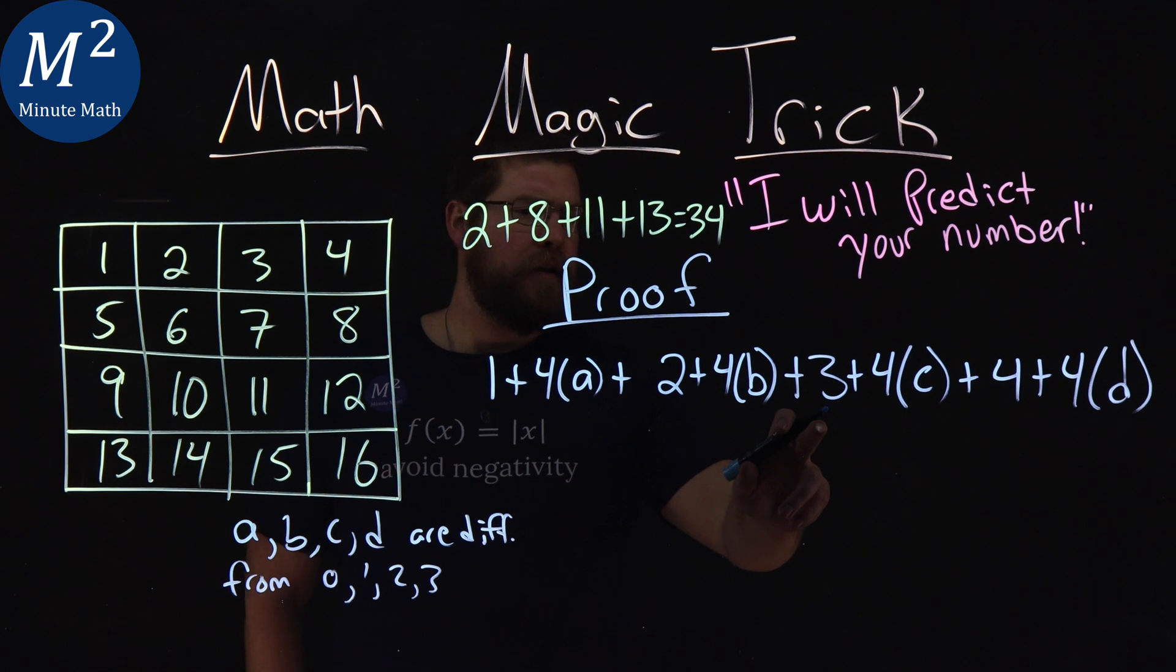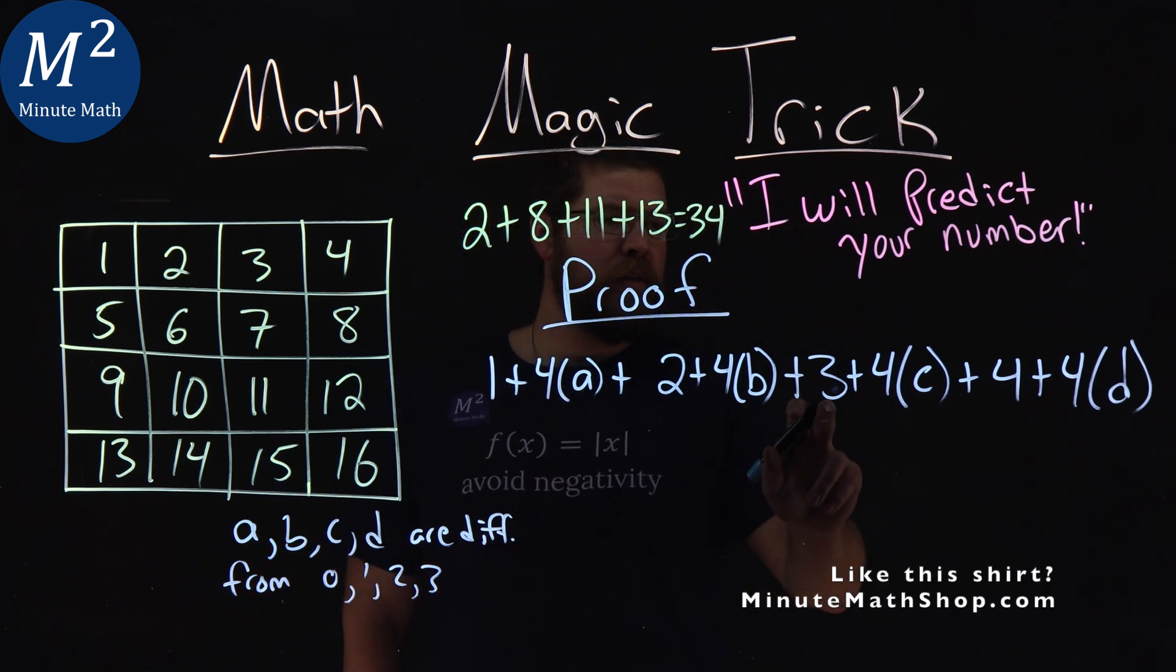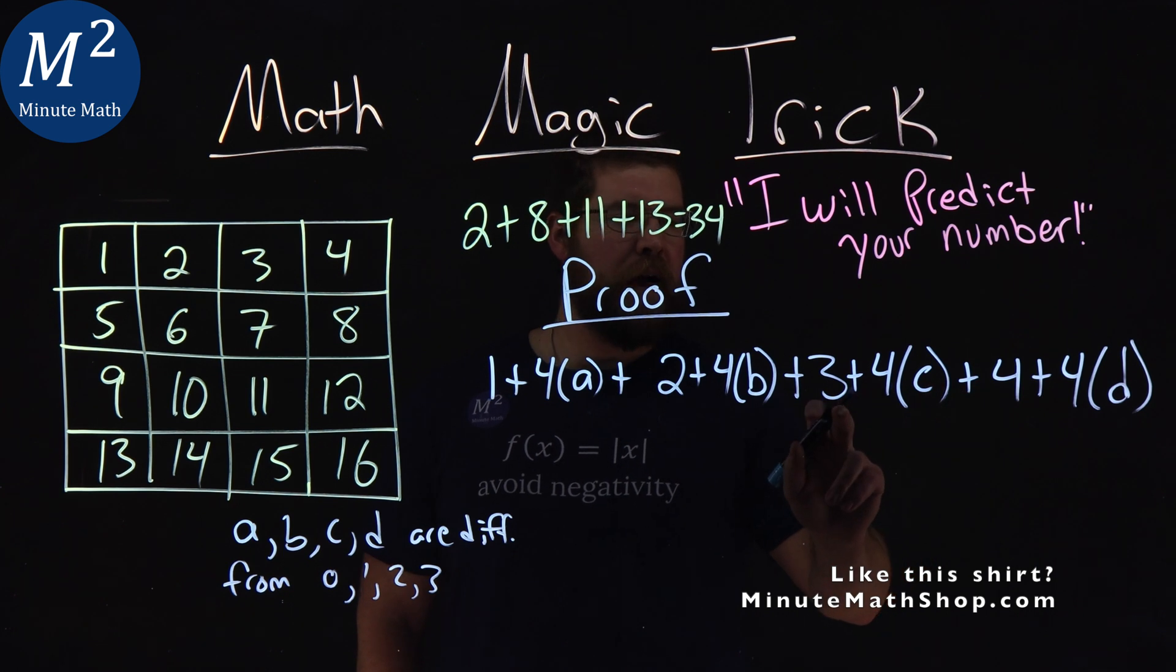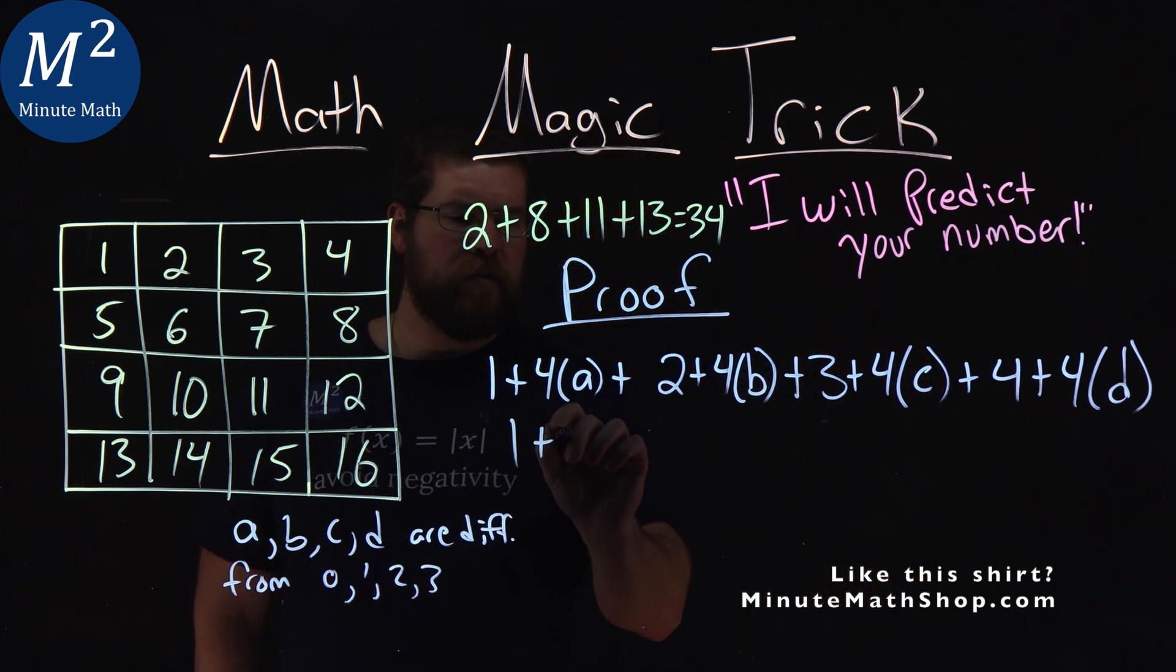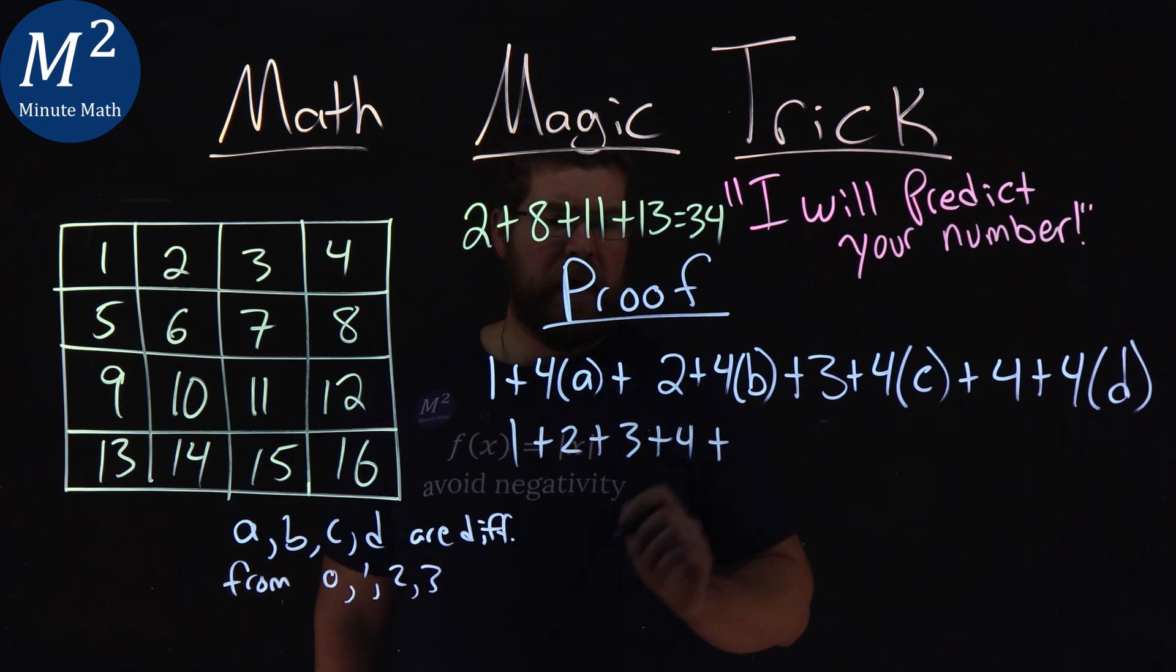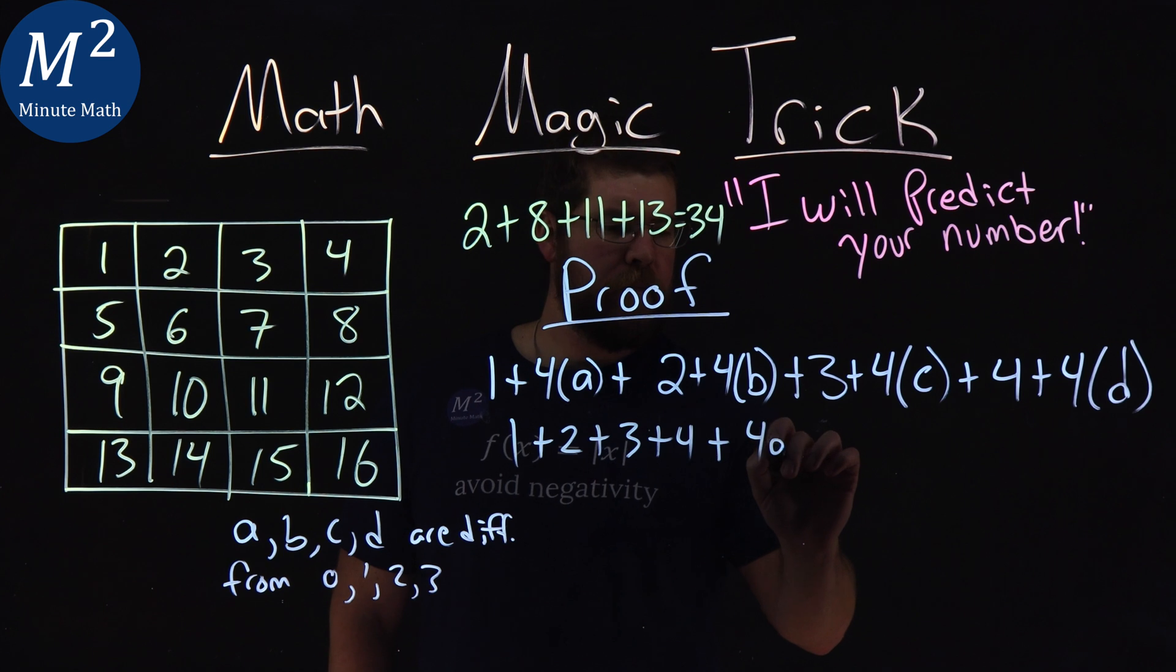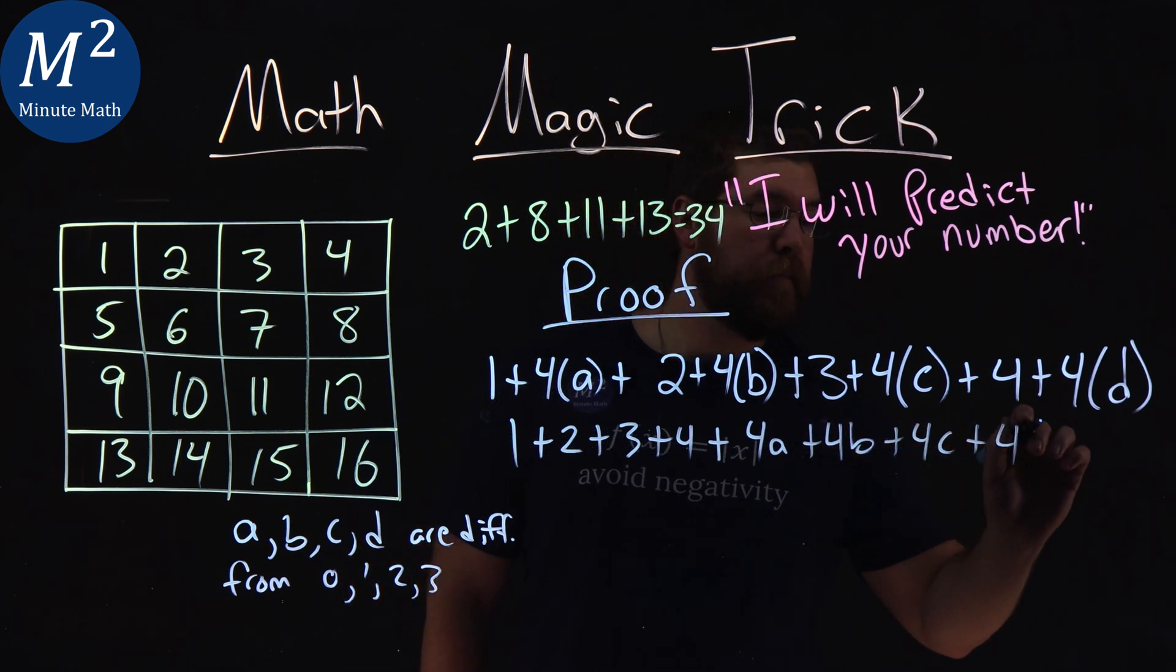I have a one, and a two, and a three, and a four separated out. Order of operations says we can rearrange this. So I have one plus two plus three plus four, and then we're adding that to four a plus four b plus four c plus four d.